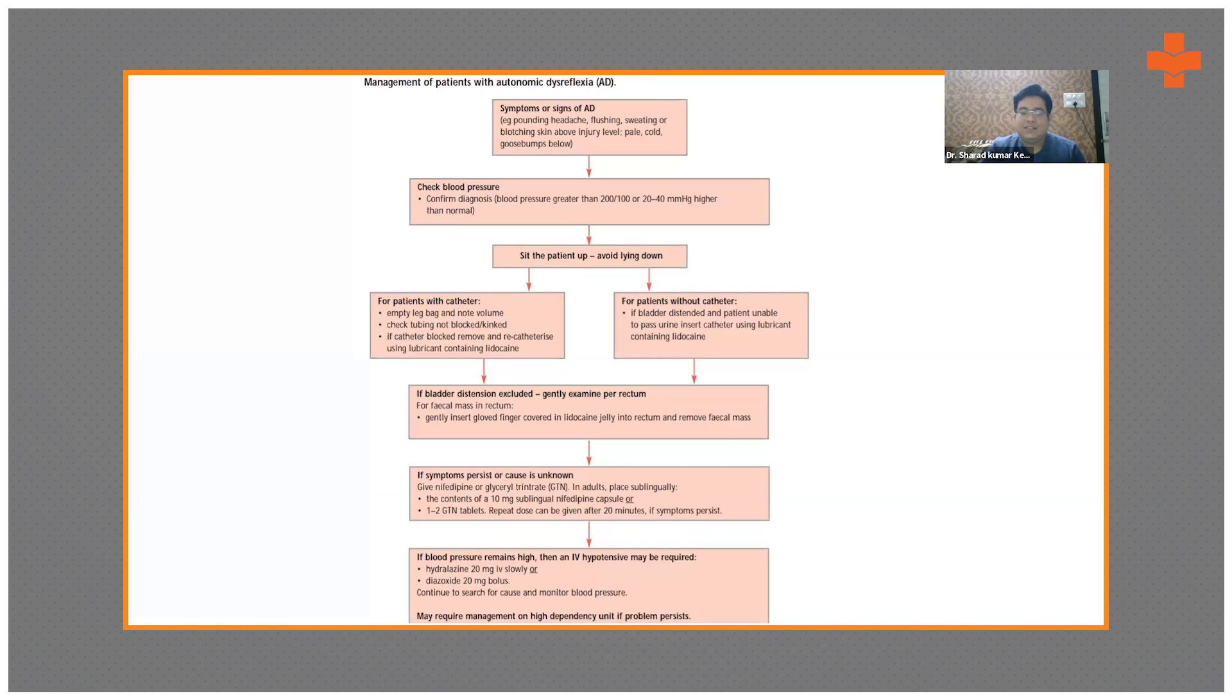Once you note the baseline, if there is any time a higher rise in the BP by 20 or 40 millimeters than the normal, then you start acting upon it because it can be a sign of autonomic dysreflexia.